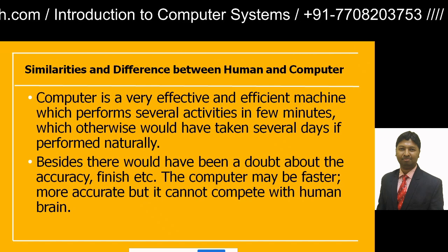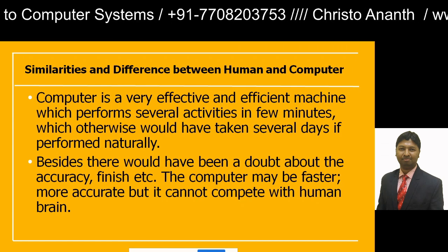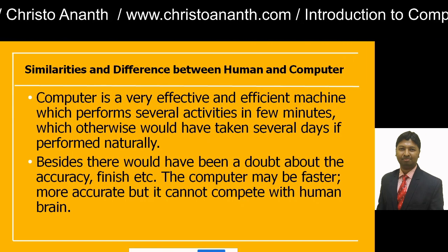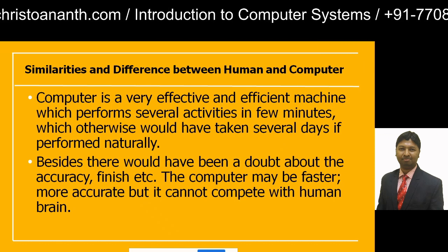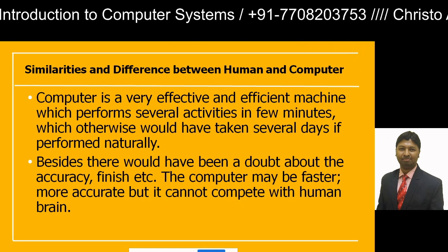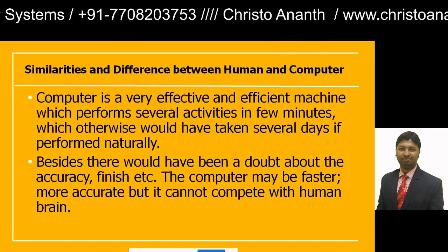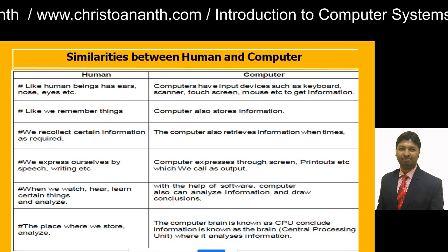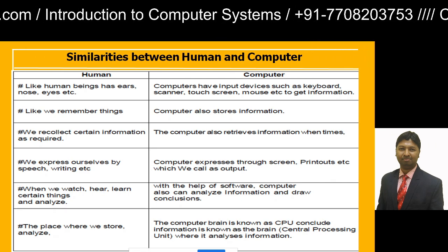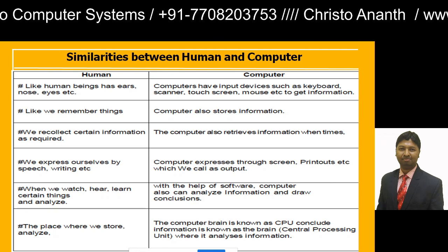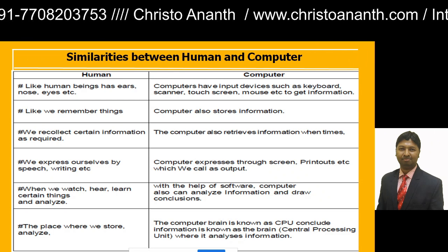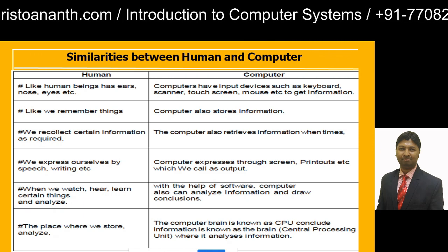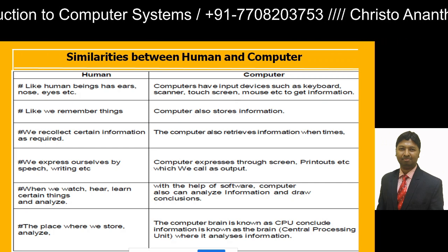We will identify the similarities and differences between a human and a computer. A computer is a very effective and efficient machine; several activities can be performed within seconds or minutes. When it comes to accuracy or completing tasks, the computer is faster and more accurate than a human. Just like a human has ears, nose, and eyes, a computer has input devices such as a keyboard, scanner, screen, and mouse to receive information.